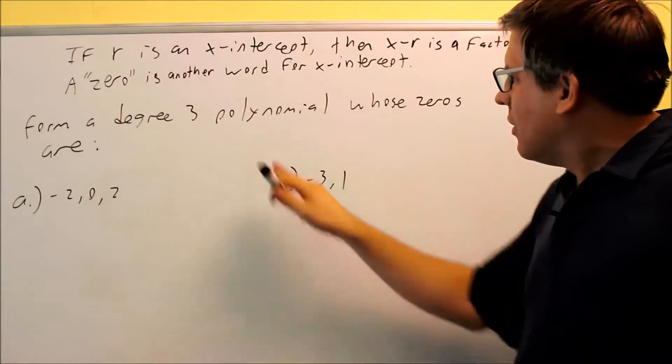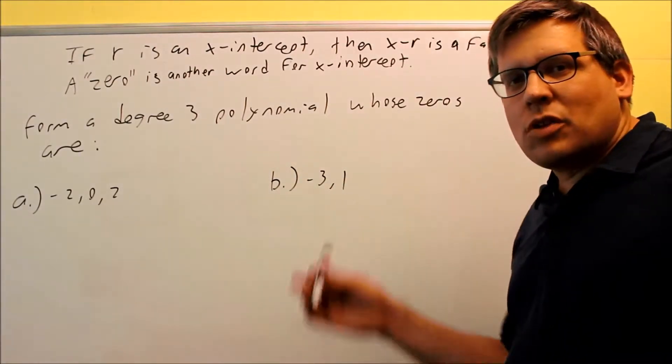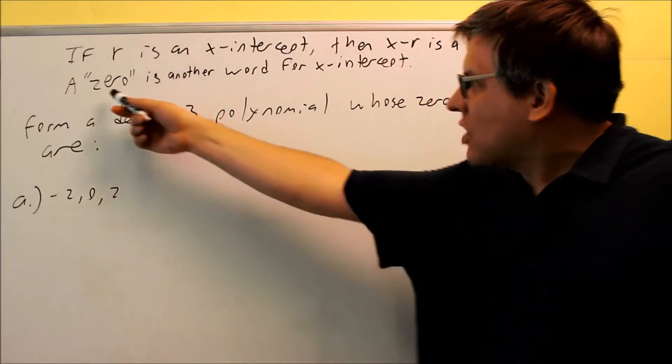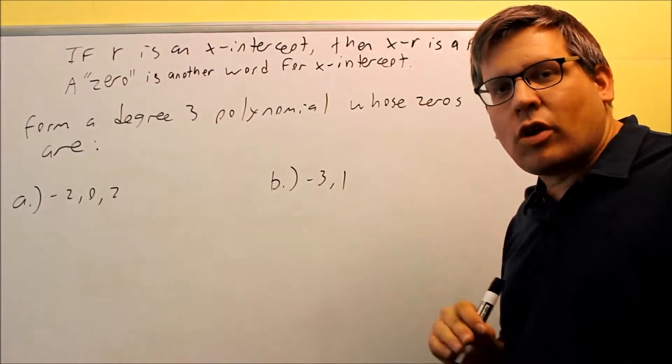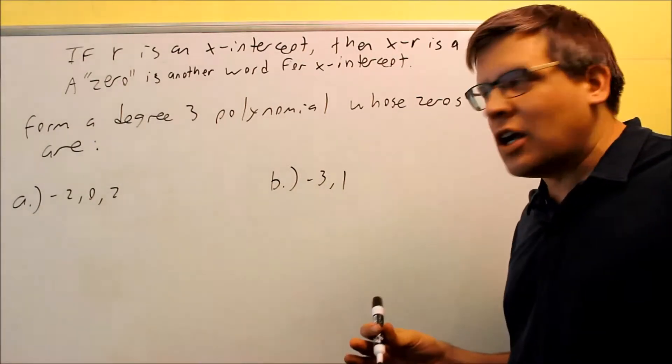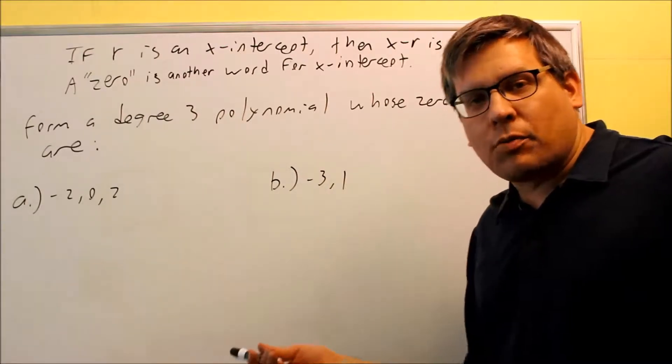Also, in these questions you'll see the phrase zeros in there. That doesn't mean the actual number is zero. What it means is a zero, that's another word for an x-intercept. So when you see questions where they ask you for zeros, it means they're really saying those are the x-intercepts that they're giving you. They want you to come up with a polynomial.